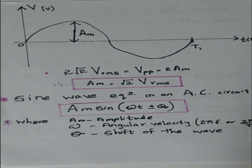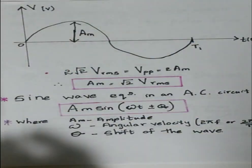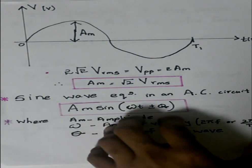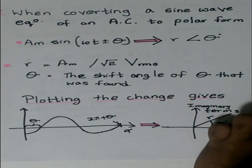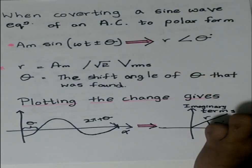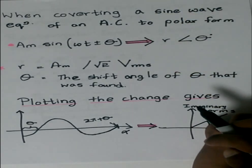And θ is the shift of the wave, either going in this direction or that direction depending on the sign. As we go to convert a sine wave from an equation of an AC to polar form, it's really simple.